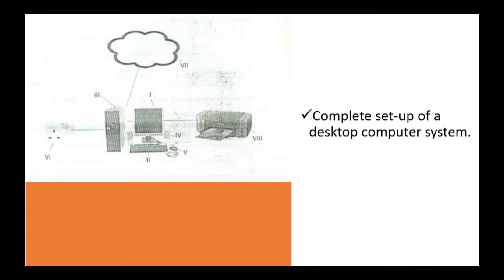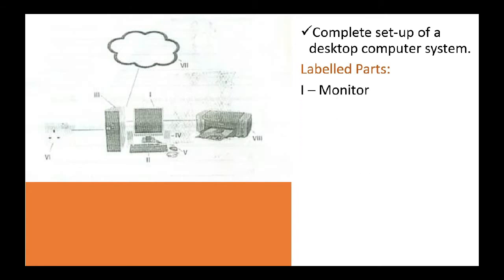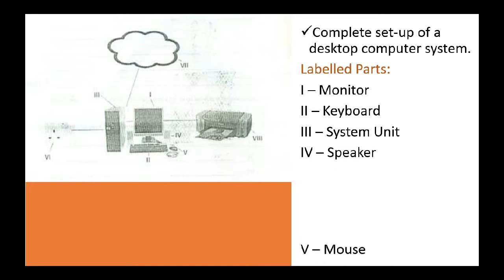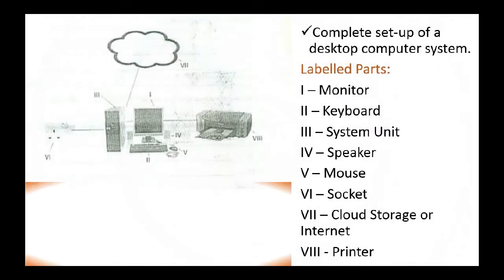Let's take one more question on computer hardware. This diagram is also from one of the past questions. Name the labeled parts and give their functions. This is a complete set of a desktop computer system. Label 1 is monitor, Label 2 is keyboard, Label 3 is the system unit, Label 4 is the speaker, Label 5 is the mouse, Label 6 is the socket, Label 7 is cloud storage or internet, and Label 8 is printer.